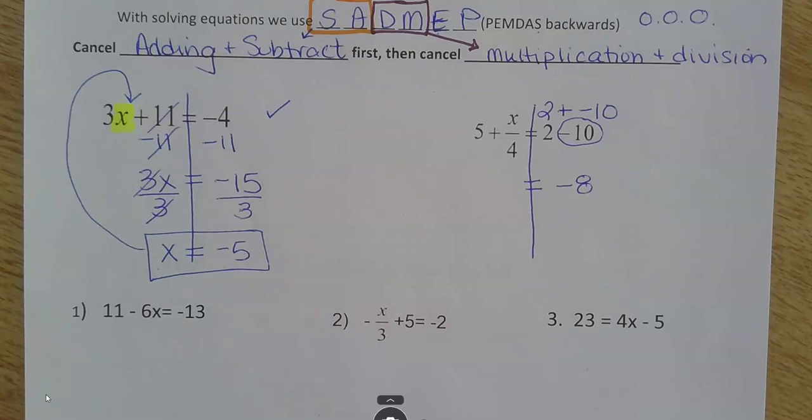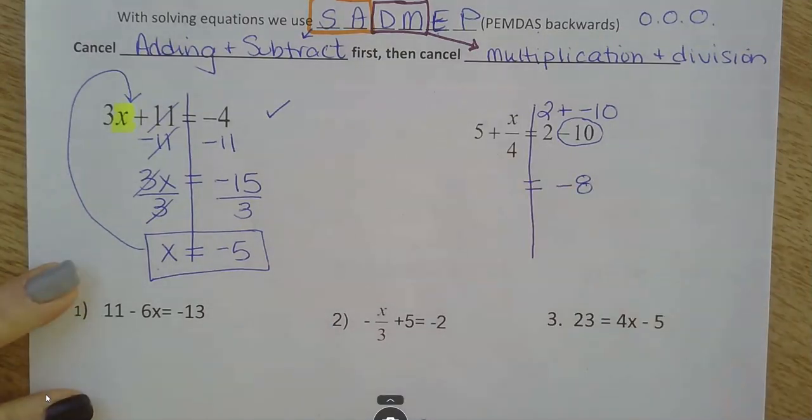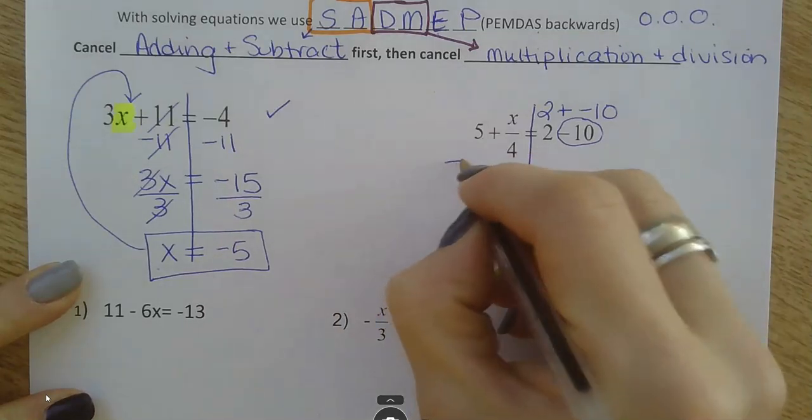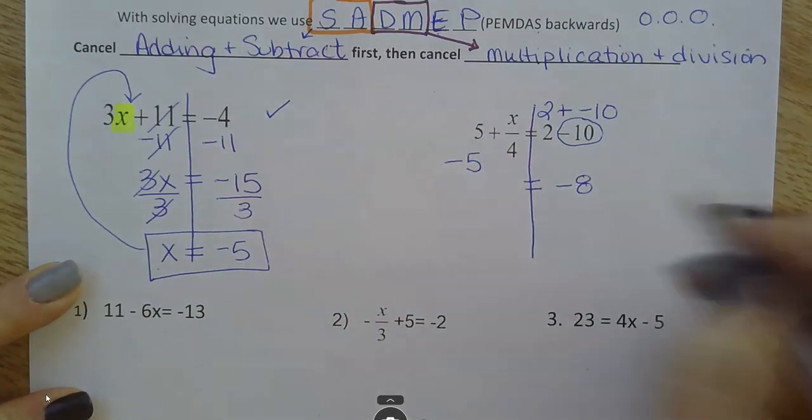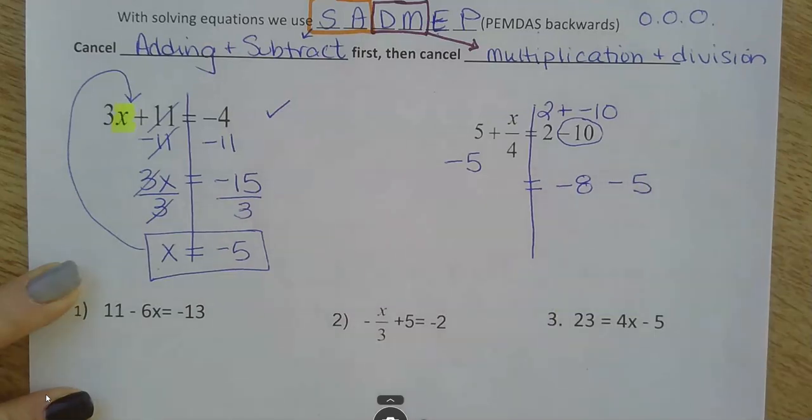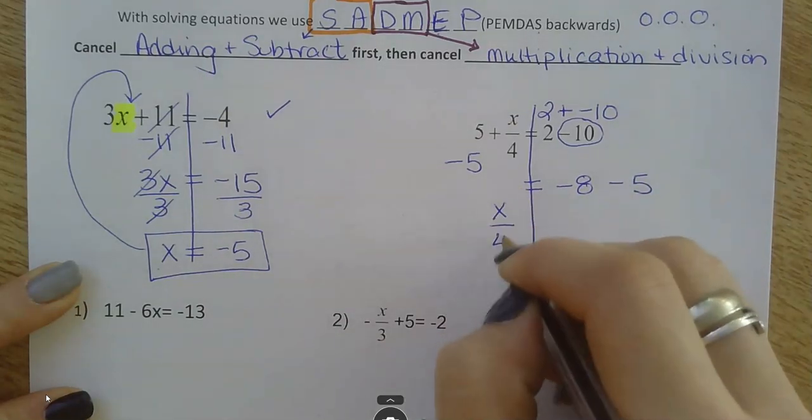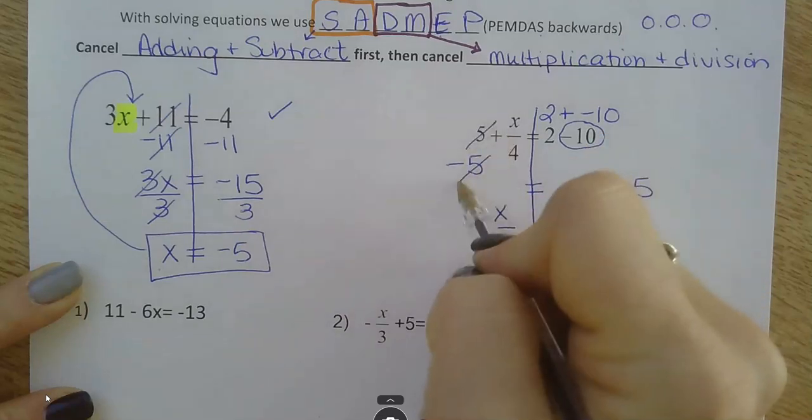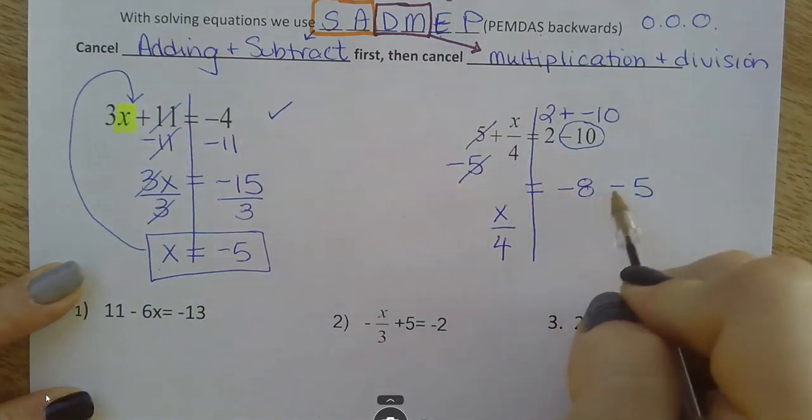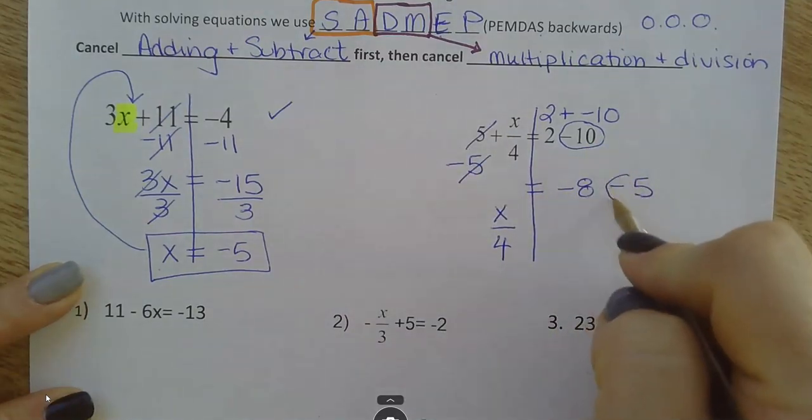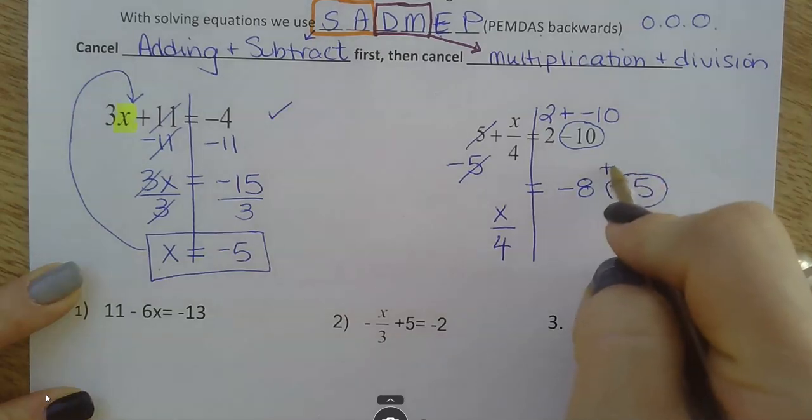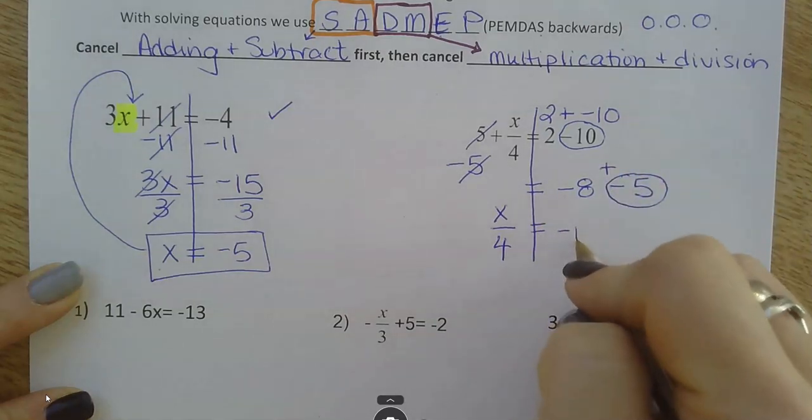Well, cancel out adding and subtracting first. That means get rid of the 5. A positive 5, I would cancel it out with minus 5. So, bring down what you have. The 5's cancel over here. Negative 8 minus 5, or negative 8 plus negative 5, is negative 13.